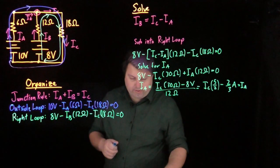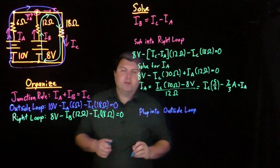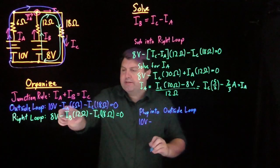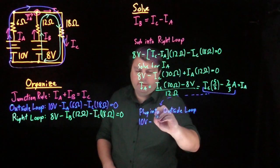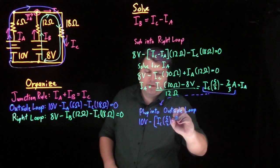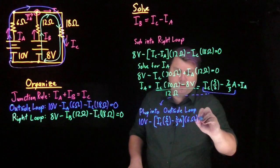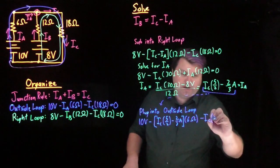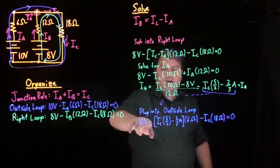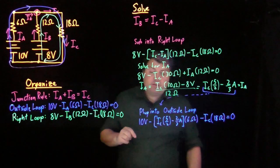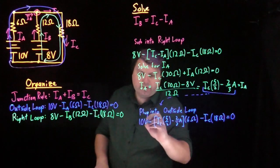And so my last thing that I can do is I can plug into my outside loop equation. So now I have 10 volts minus, every time I see Ia I replace it with Ic times 5 halves minus 2 thirds of an amp times 6 ohms minus Ic times 18 ohms equals 0. Now after these two substitutions, I now have just one unknown in this equation, Ic. I've now reduced it to one equation, one unknown.